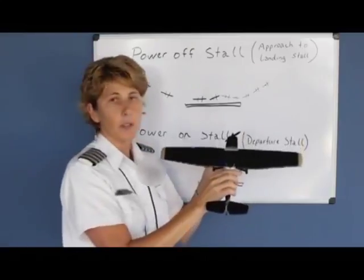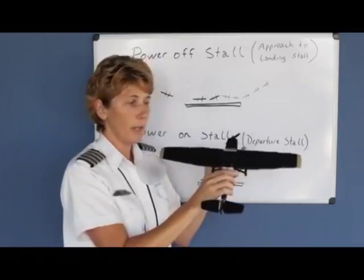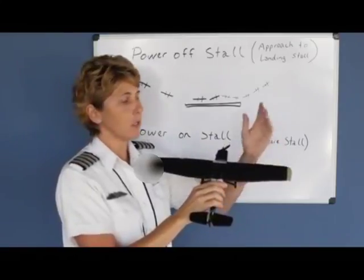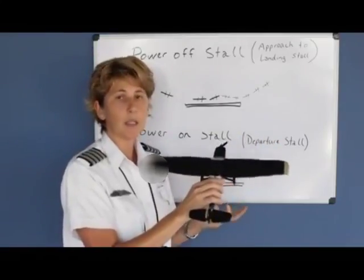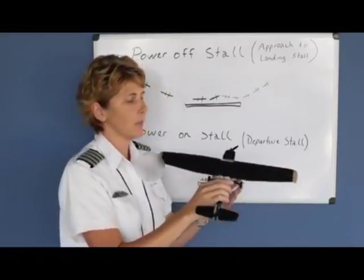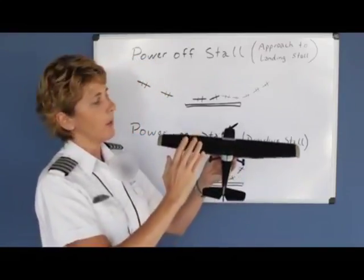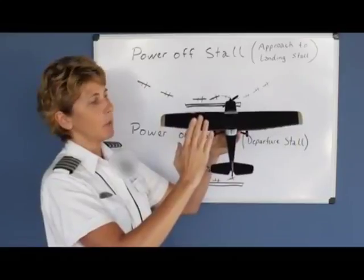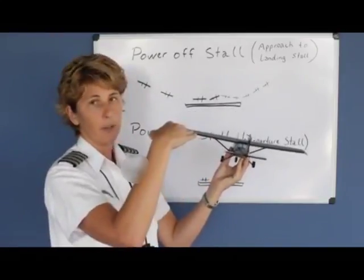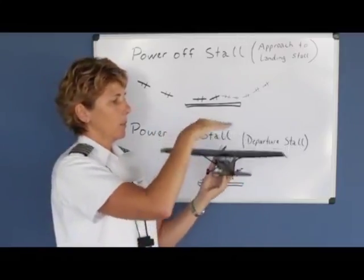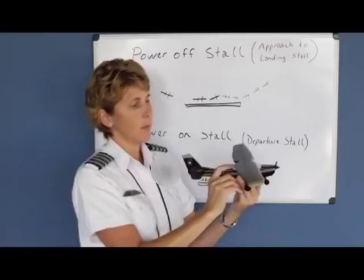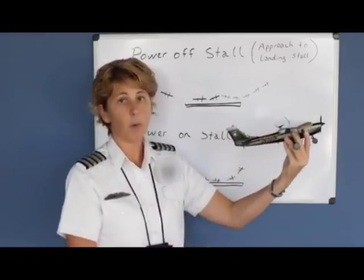Once you hear the stall warning go off, or you feel the airplane shudder — when the wind is starting to separate from the wings — you should verbalize 'imminent stall' to let the examiner know you recognize this on-stalling condition. Now we already have full power in there, so all we need to do to recover is simply push the nose back to level on the horizon, let the wind reattach to the wings, let the airplane reaccelerate, and then continue to climb with a normal pitch attitude.